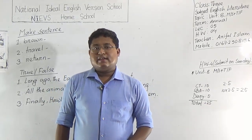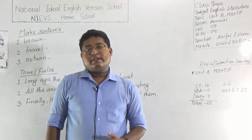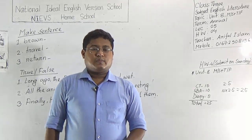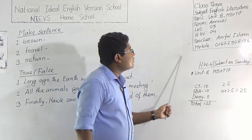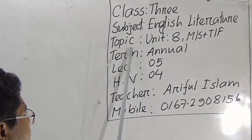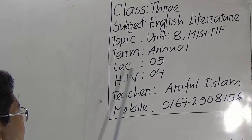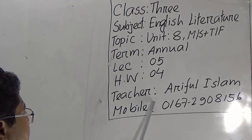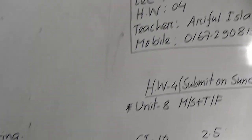Today's topic is Unit 8 — make sentence and true/false. This is a class work (CW) and this lecture is very important because at the end of the class I will give SW number 4. Please do the class very carefully. Class 3, subject: English Literature. Topic: You Need 8, make sentence, true/false — term annual lecture 5. SW will be number 4.